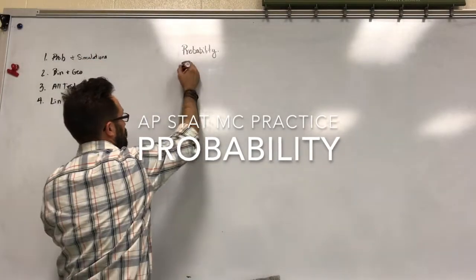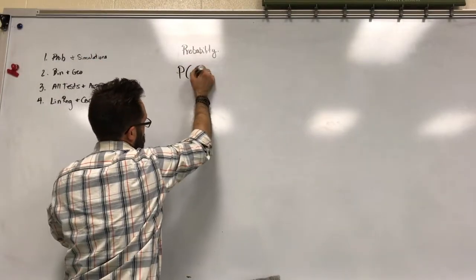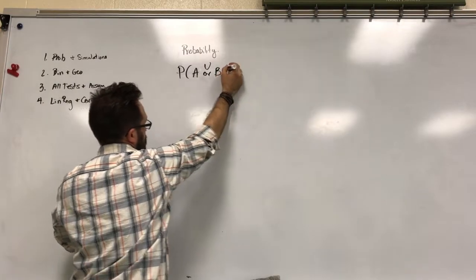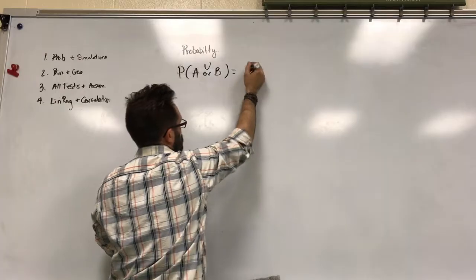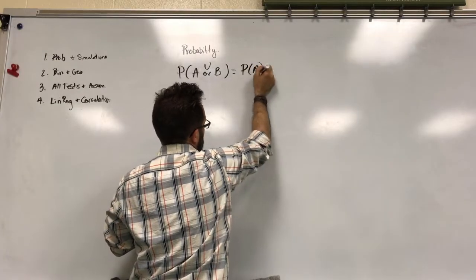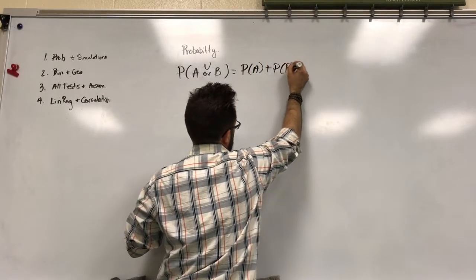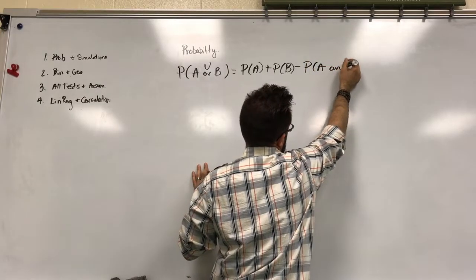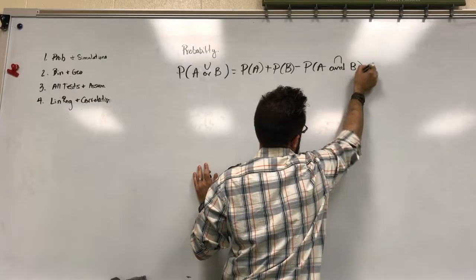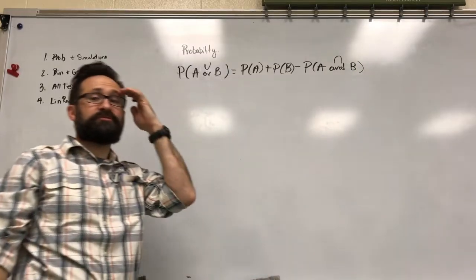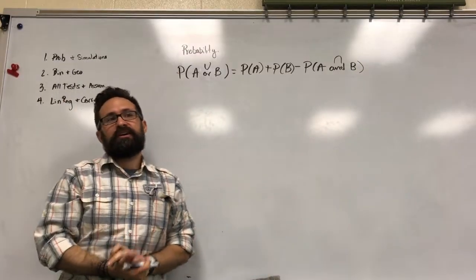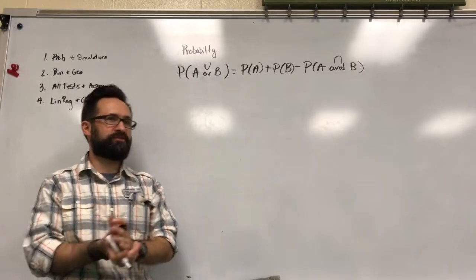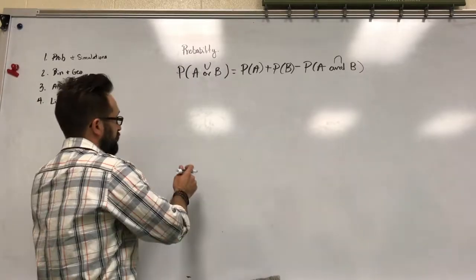One of the most important formulas that we've used is the probability of A or B. It's equal to the probability of A plus the probability of B minus the probability of A and B. That comes up so often. It's the one formula that connects and to or. So make sure that if you don't know that, you can work.